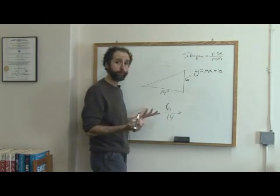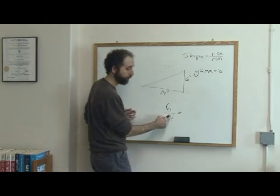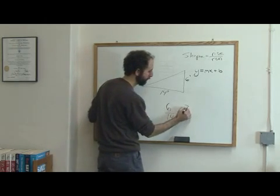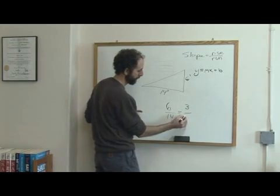And of course, any time you can reduce, you should. So we can divide this by 2 and that by 2. 6 divided by 2 is 3. 14 divided by 2 is 7.